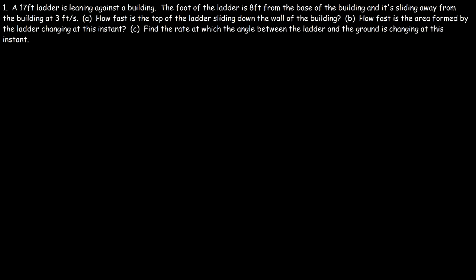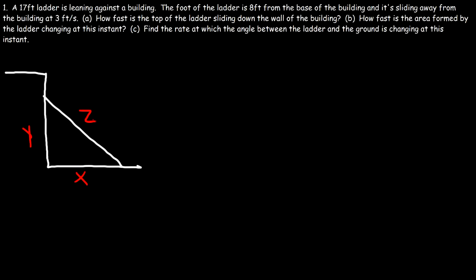Problem number one: a 17-foot ladder is leaning against a building. The foot of the ladder is eight feet from the base of the building and it's sliding away from the building at three feet per second. How fast is the top of the ladder sliding down the wall of the building? Let's find out. Let's start with a picture: here's the building, this is the ground, and this is the ladder. Let's call the horizontal distance X, the vertical height Y, and the length of the ladder Z.